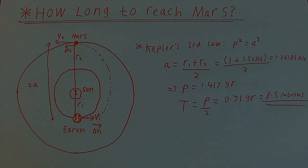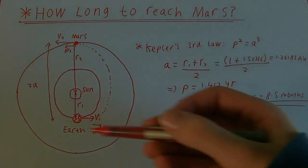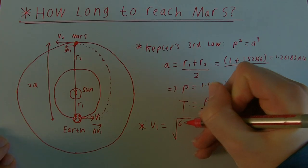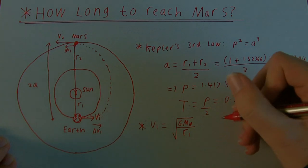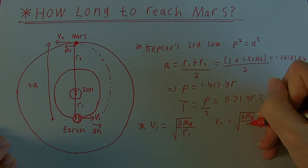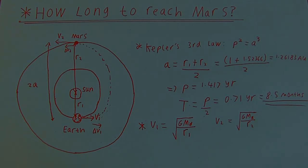Now that we know roughly how long it takes to get to Mars, I'm going to set up a few equations we'll need to work out our delta V. We already know V1 — the velocity Earth travels around the Sun — and V2 — the velocity Mars travels around the Sun. They're given by the velocity in a circular orbit: V1 is the square root of G times the mass of the Sun divided by R1 (measured in metres), and similarly for V2 using R2. But that's not quite enough to work out delta V1 and delta V2.